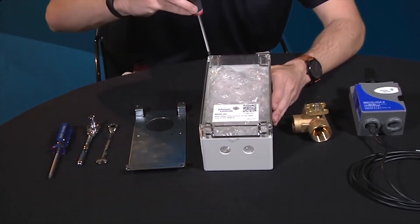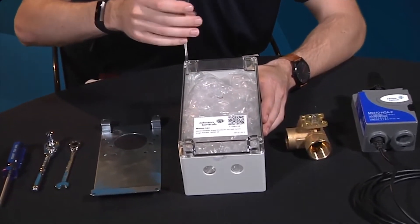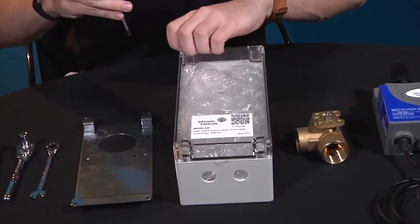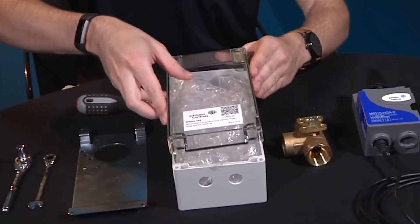The first step is going to be to remove the weather shield enclosure cover, loosening the four screws, one on each corner, but don't remove them completely. Remove the cover and set it aside.